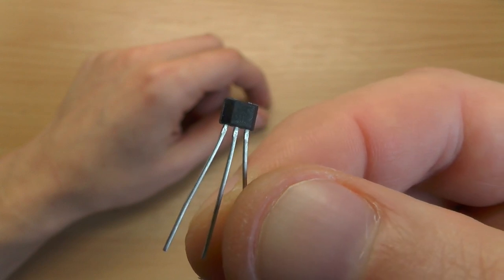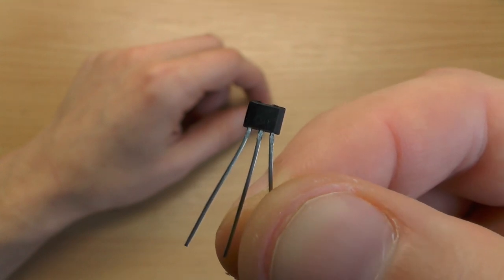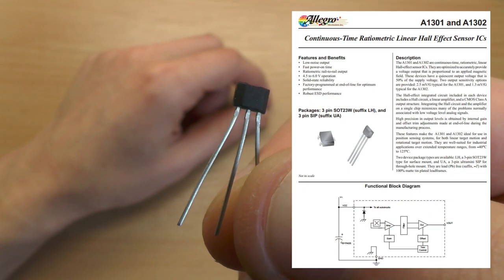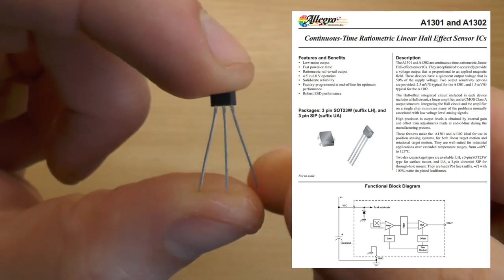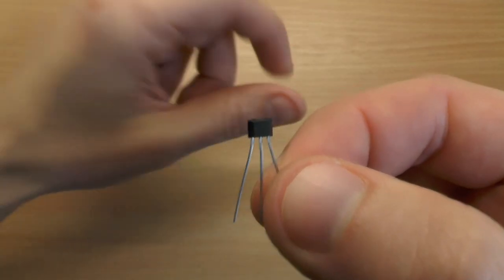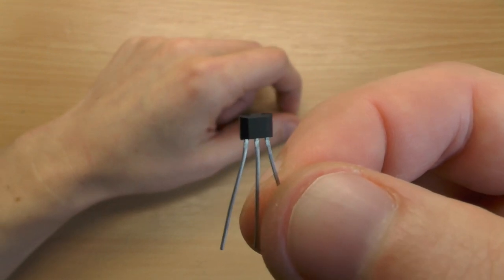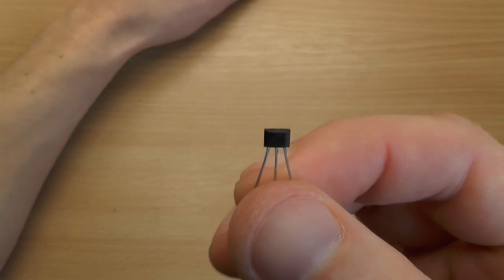that are just measuring if there is a significant field or not, and linear ones like this here, which has a voltage as output that indicates the strength of the field and also the polarity. So let's just take a look how this works.